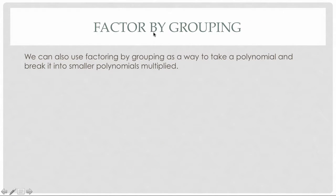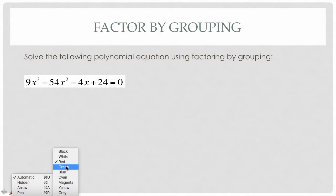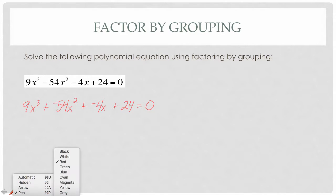We also have factoring by grouping. We've done this before as a method for factoring quadratics, but we can use it for larger polynomials as well. We're going to solve 9x³ − 54x² − 4x + 24 = 0 using factoring by grouping. The first thing I need to do is rewrite everything as addition: 9x³ + (−54x²) + (−4x) + 24, so when I group I don't run into problems with distributing negatives.